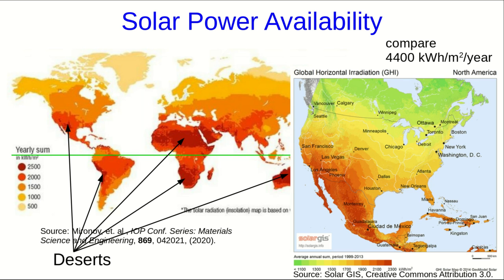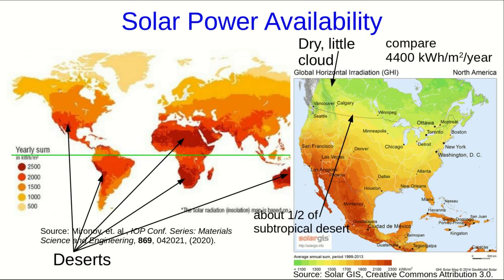Looking in more detail at North America and thinking about Canada, the best availabilities in Canada — out in the prairies — are about half the availability of a subtropical desert. But there are regions of pretty good availability extending surprisingly far north, again because of how important it is to have dry air and little cloud.